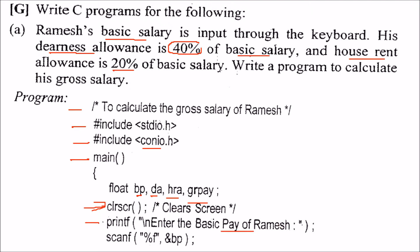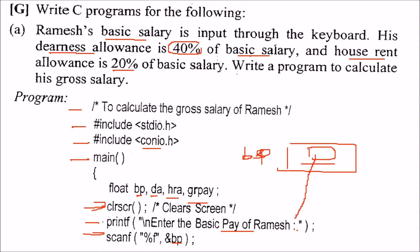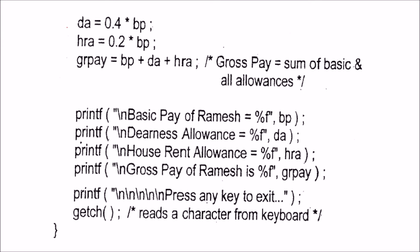Whatever the user enters, we'll take it through scanf into BP. BP is actually a location in memory, and it will store the float value — whatever is being entered by the user — using the %f format specifier. This will be the basic salary. Now the next task is to find out the dearness allowance, which will be 40% of the basic salary.